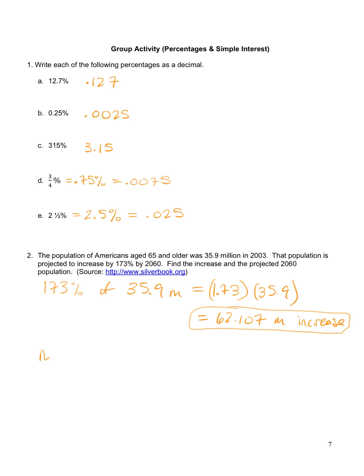And then the new population, we have to add the increase amount to the old amount. So we used to have 35.9 million people in 2003. We're going to add the amount we increased by, 62.107 million people, and we get 98.007 million.